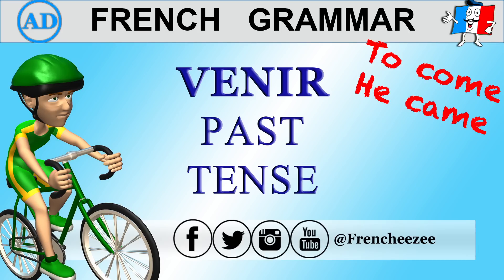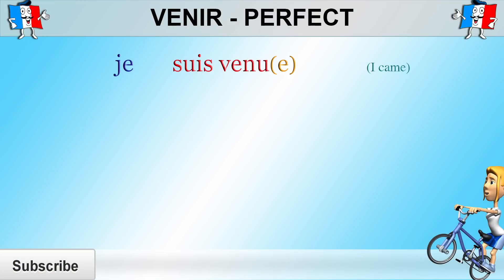Le verbe venir au passé composé. To conjugate venir in the perfect tense, also called le passé composé, you first need to conjugate the verb être in the present tense and then add the past participle of the verb venir.